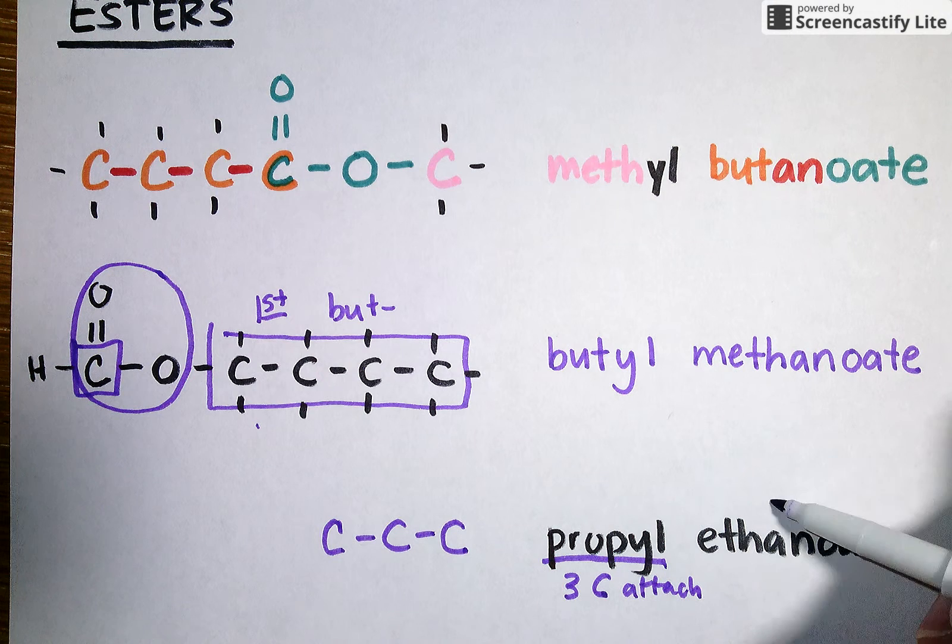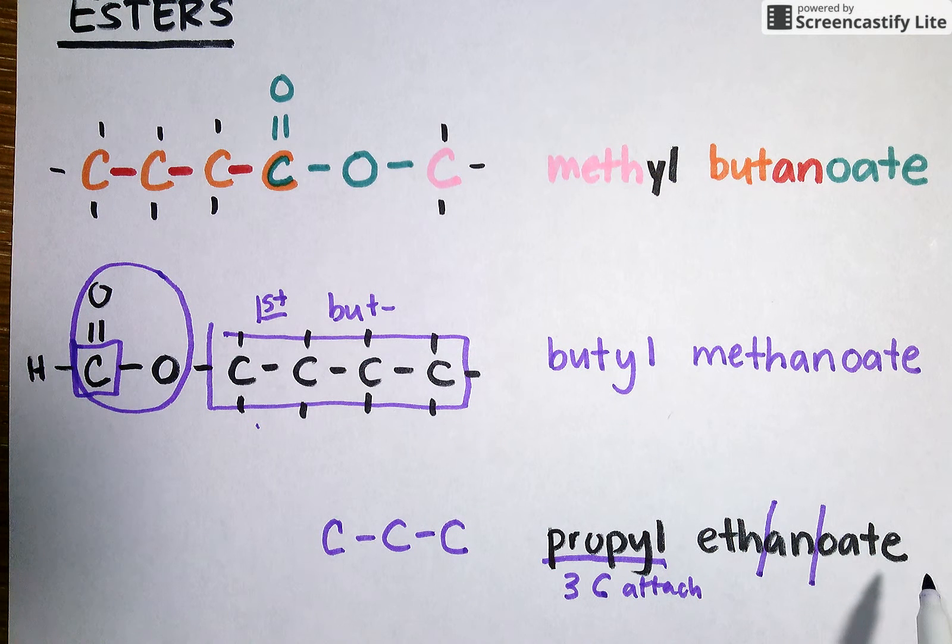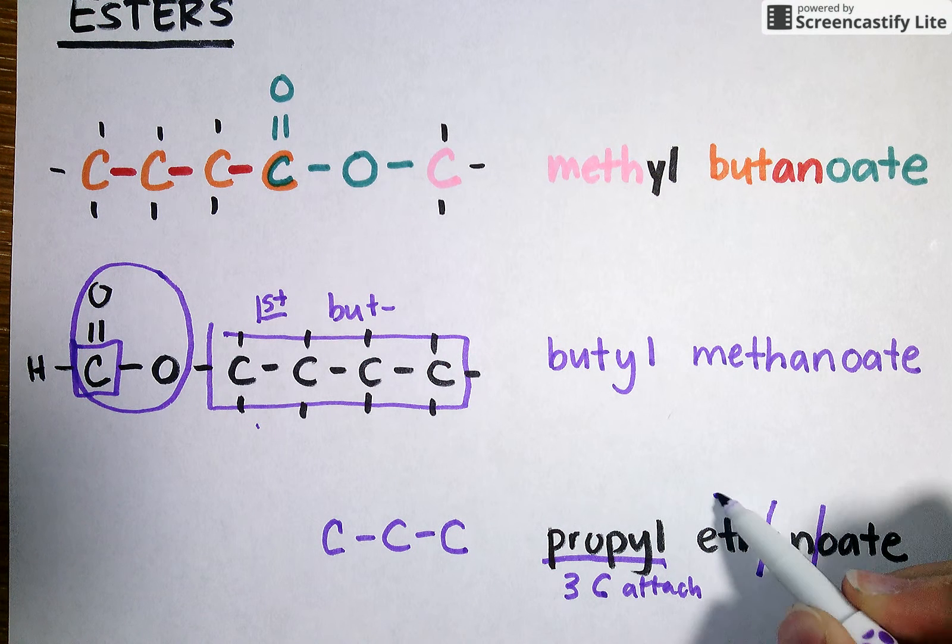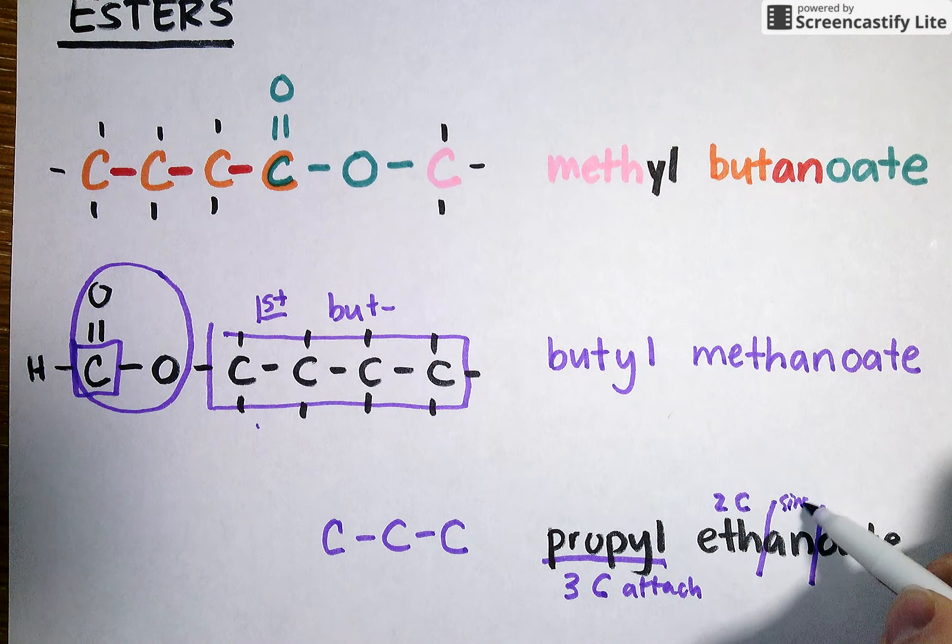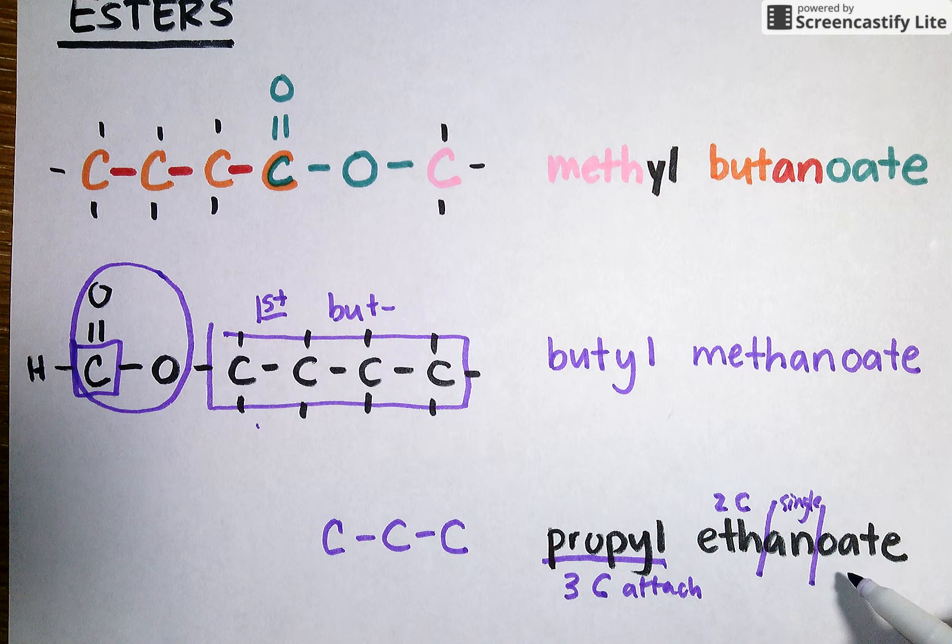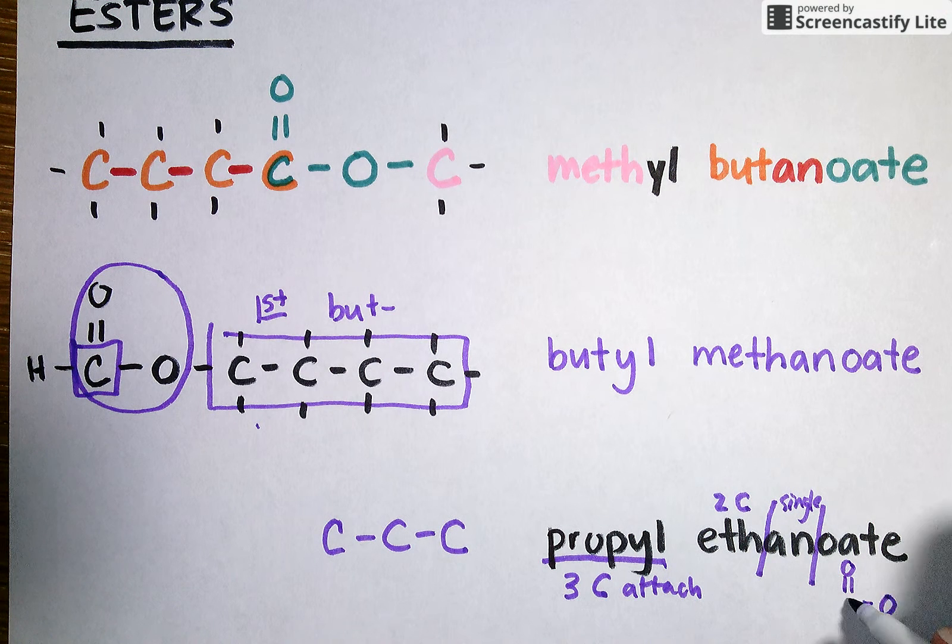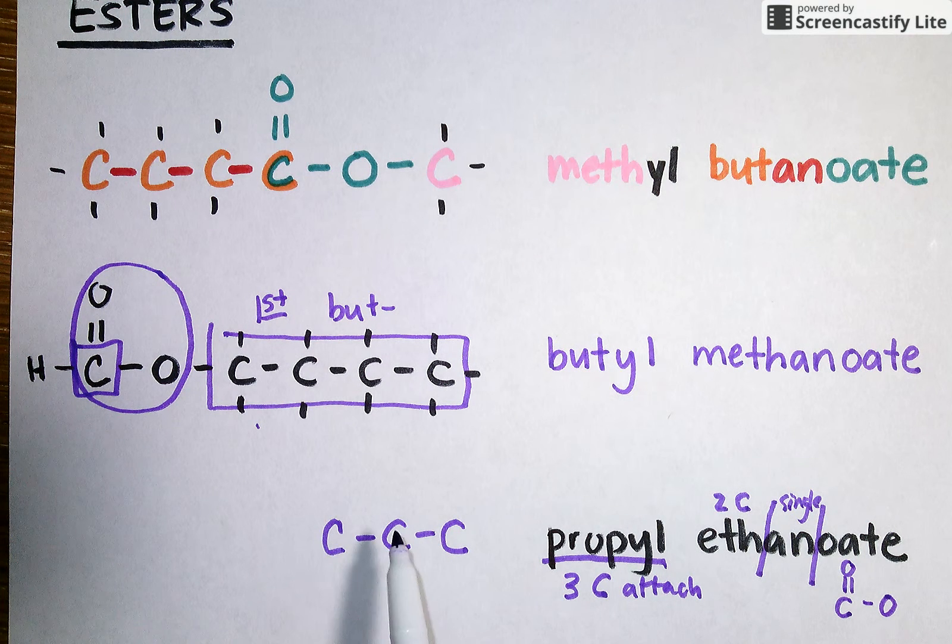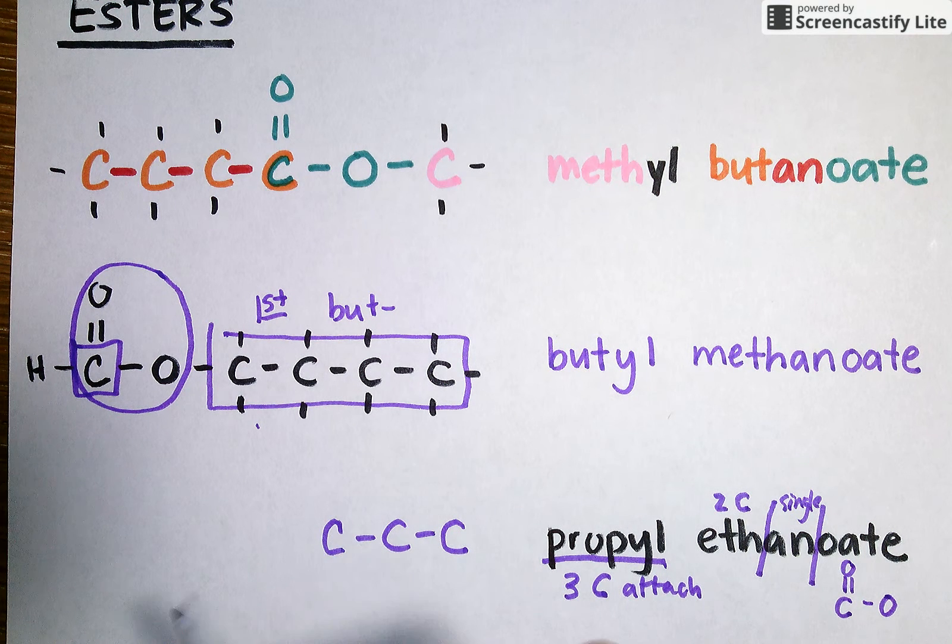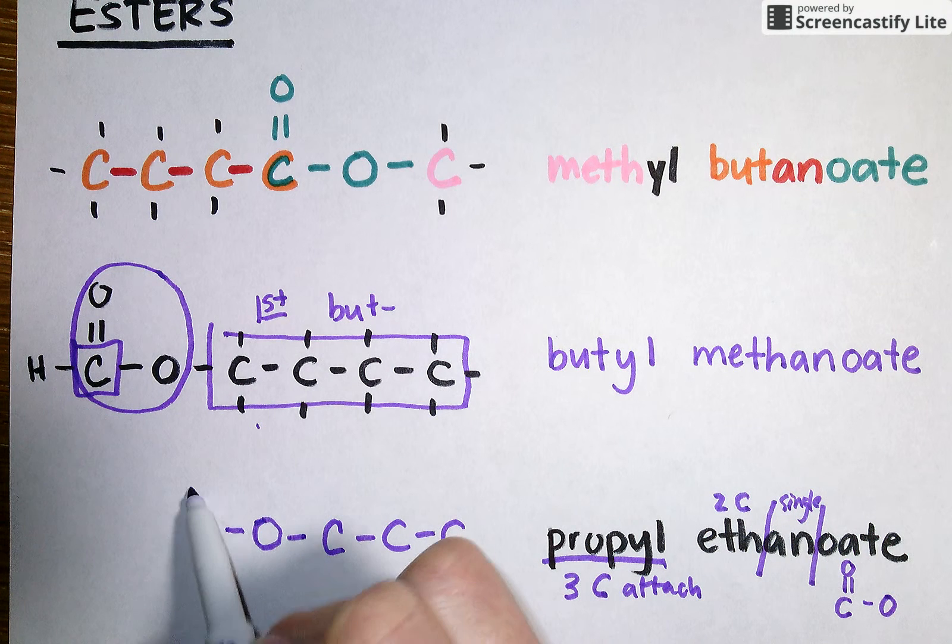In this, I see the prefix eth connected by single bonds and the oate ending that tells me I have an ester. So I know that in this molecule I need to draw in two carbons and connect them with single bonds. And I know that this ending means I've got that characteristic ester divider that's going to be in between these two sets of hydrocarbons. So let me draw that dividing functional group in first.